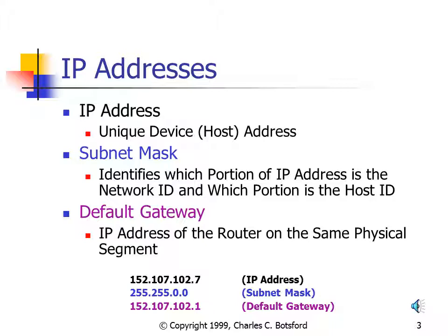The default gateway is the IP address of the router on my same physical segment. Once I've added the IP address and subnet mask, I have local communications and can communicate to hosts on my same physical segment. By adding the default gateway — the IP address of the router on my segment — I'll have remote communication and be able to potentially communicate with everyone on the network.